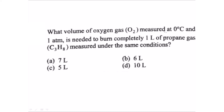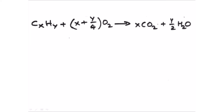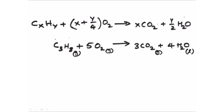The reaction is propane plus oxygen — this is the combustion of propane. Propane is C₃H₈. The combustion produces carbon dioxide and water. Balancing the equation: C₃H₈ plus 5O₂ gives 3CO₂ plus 4H₂O. Balance carbon and hydrogen first, then fix oxygen on the left side.